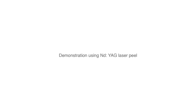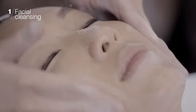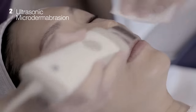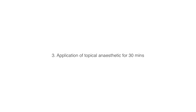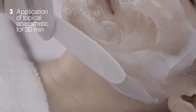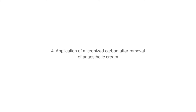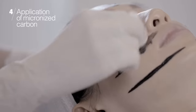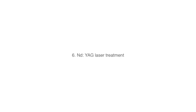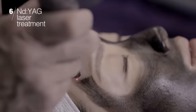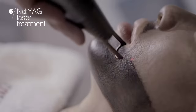The NDAG laser procedure comprises the following steps: one, facial cleansing; two, ultrasonic microdermabrasion, though other forms of microdermabrasion may be used; three, application of Emla topical anesthetic for 30 minutes; four, application of micronized carbon (20 micron size) over the treatment area after removal of Emla; five, the micronized carbon is allowed to sit for 15 minutes; six, NDAG laser treatment with two passes of quasi-long wavelength NDAG followed by two passes of 1064 wavelength NDAG.